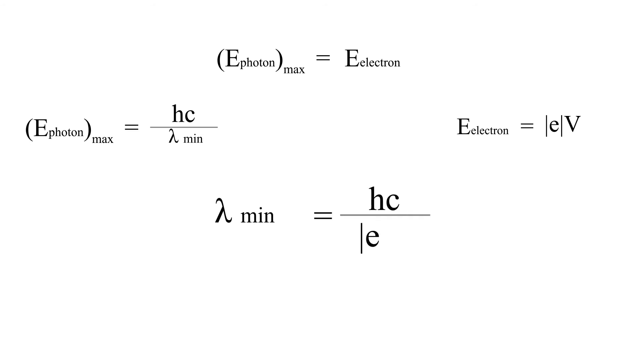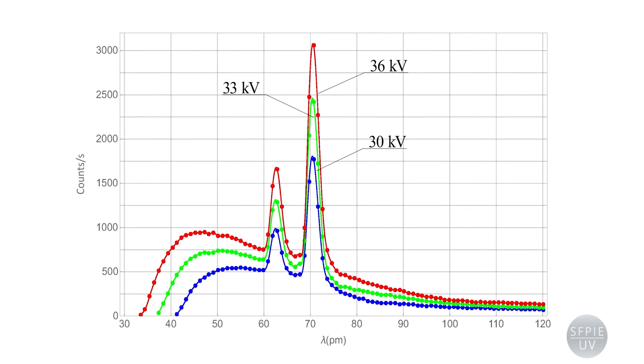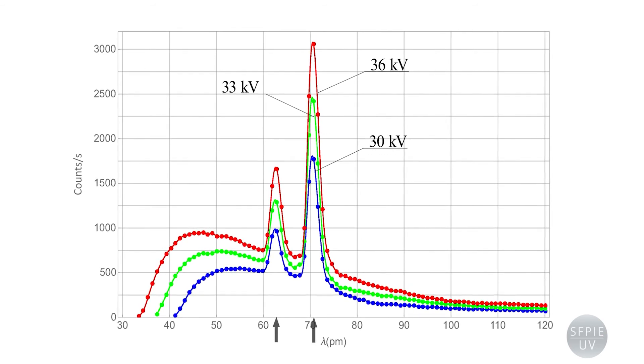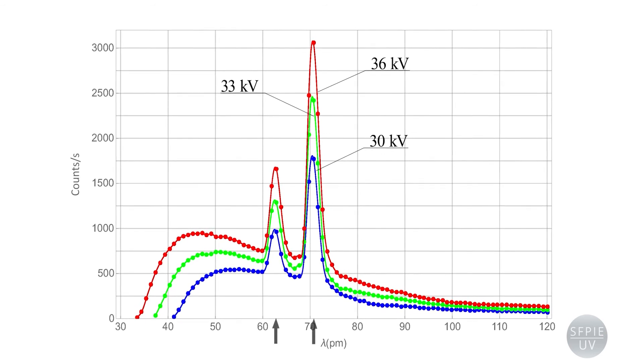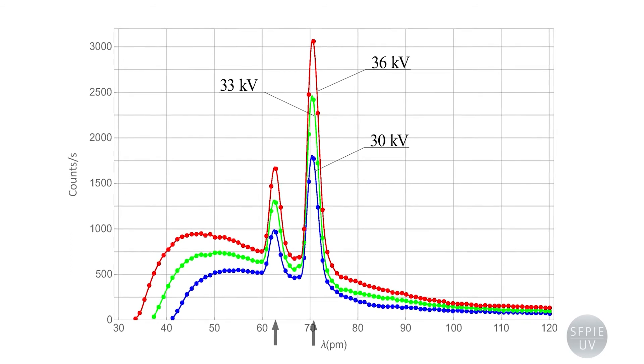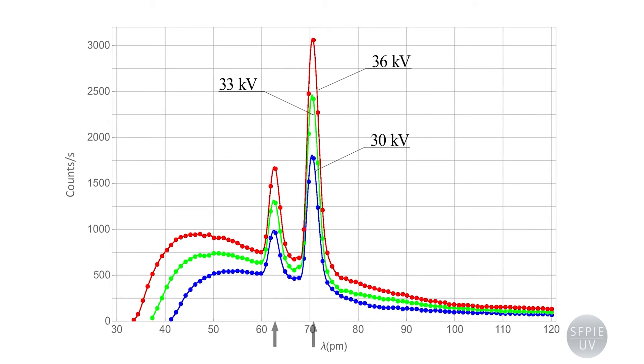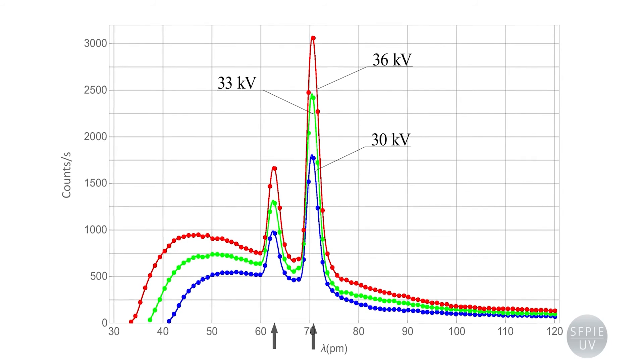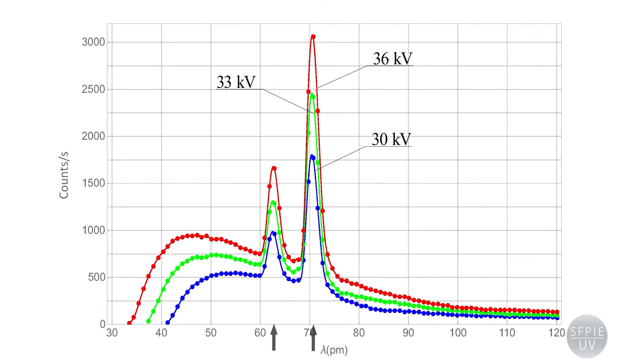We also observe that for every voltage there are pronounced peaks of intensity for some wavelengths. These are characteristic peaks of the material the anode is made of, so that if we change the anode, the peaks disappear or other peaks appear at different wavelengths.